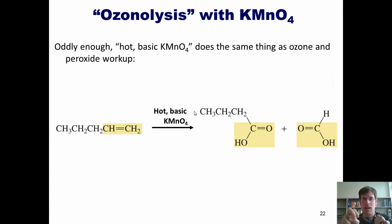Now, just so you know, oddly enough, hot basic KMnO4 does the exact same thing as ozone with peroxide workup. That is, if I take this alkene and I treat it with hot basic KMnO4, it saws it in half and adds an OH onto each of the alkenyl carbons if one of those is attached to at least one hydrogen. Does that make sense? It's the exact same outcome as if I treated this alkene with ozone followed by oxidative or peroxide workup. The only reason that I bring this up is because it seems that standardized exam writers are obsessed with KMnO4. I don't know why, but they just love it and ask tons of questions about hot basic KMnO4. So there you go.